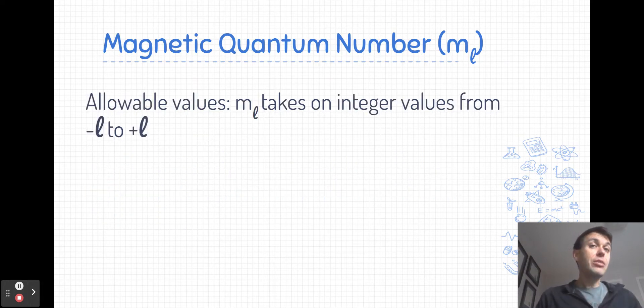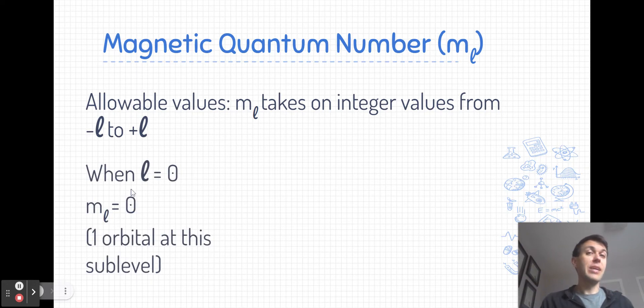The allowable values for m sub l are the integers ranging from negative l to positive l. When l is equal to zero, remember that is an s-type sublevel, there's only one possibility: m sub l is equal to zero. What that means is there's only one orbital available at the sublevel, or another way of thinking about it, there's one orientation at this sublevel.